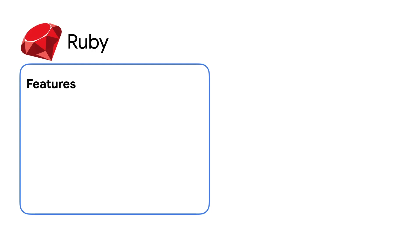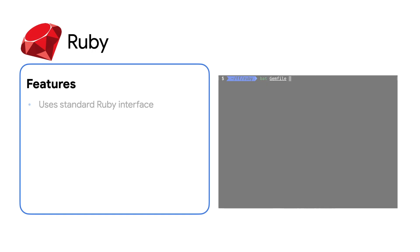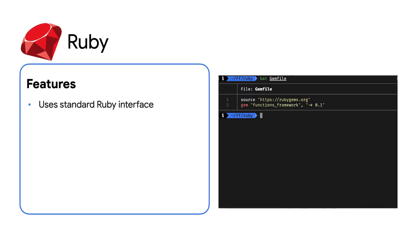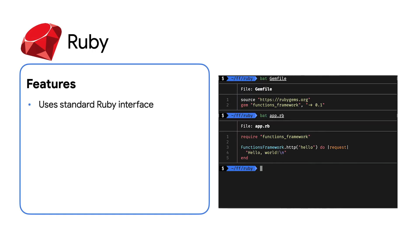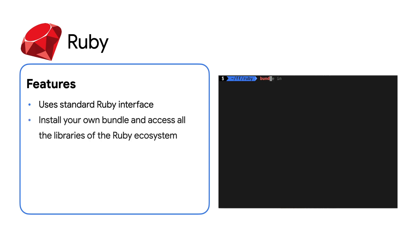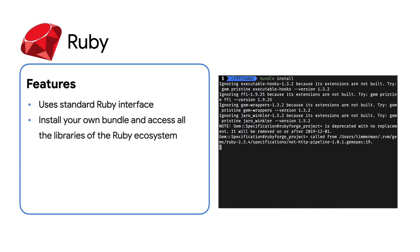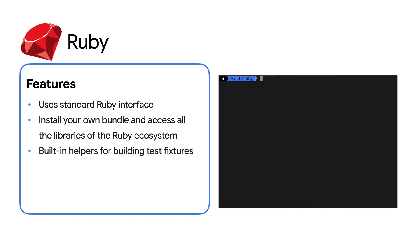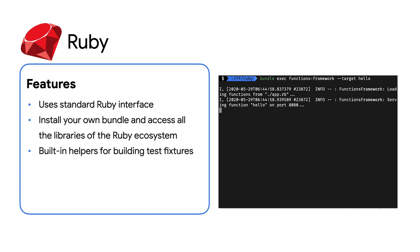The Ruby Functions Framework uses a standard Ruby Rack interface for HTTP requests and Cloud events. You can install your own bundle and access all the libraries and capabilities of the Ruby ecosystem. It has built-in helpers for building test fixtures and invoking functions in a test environment.